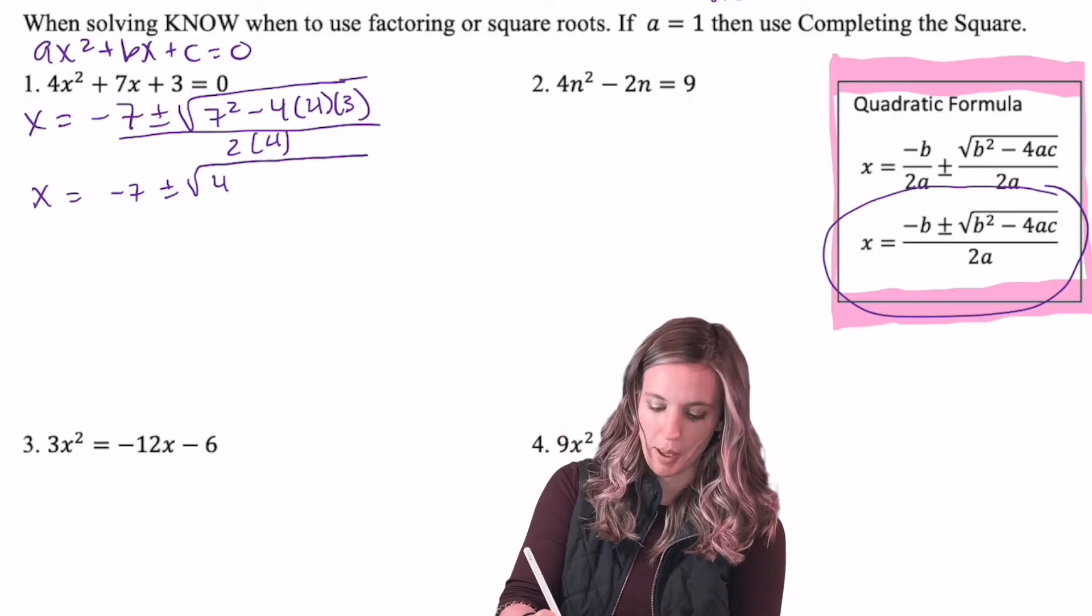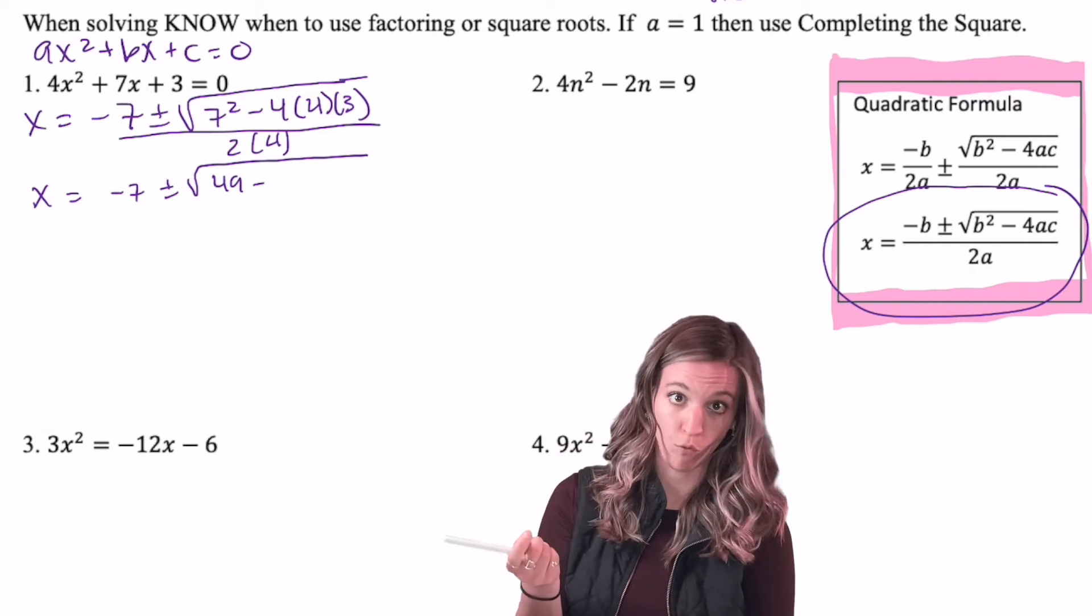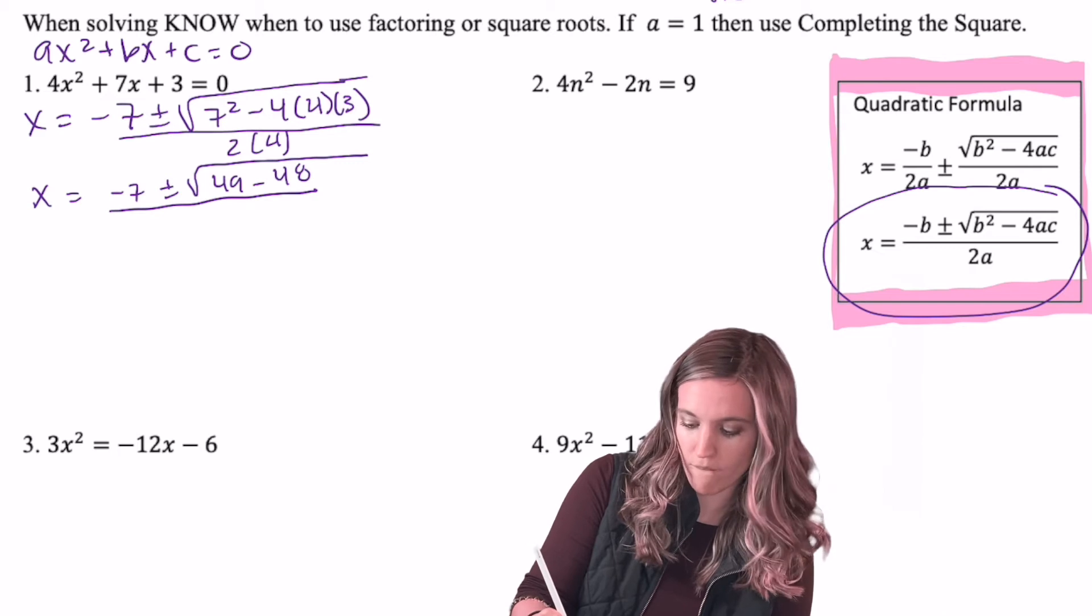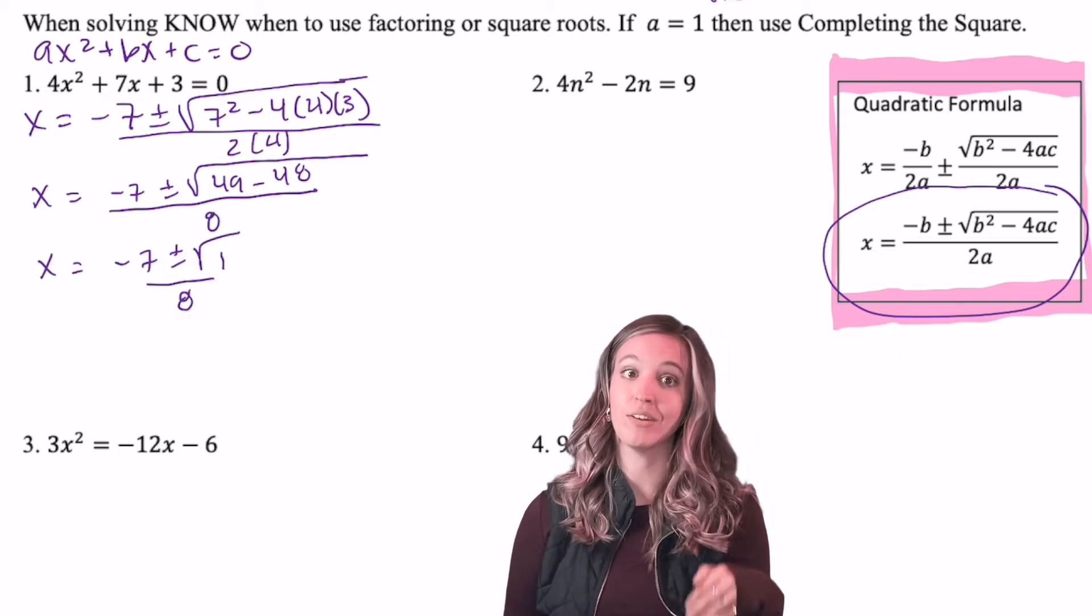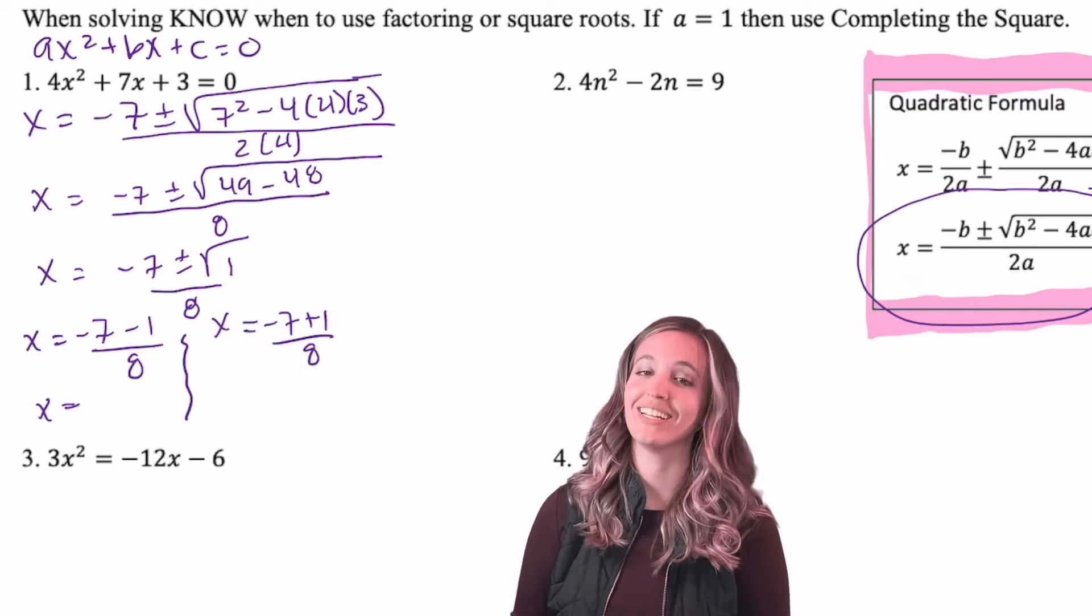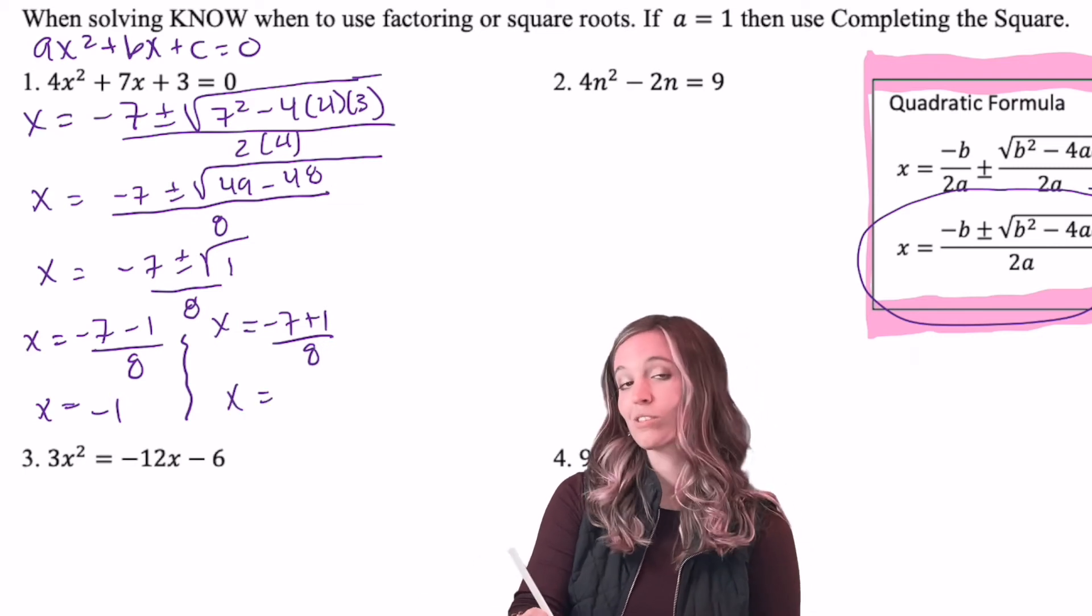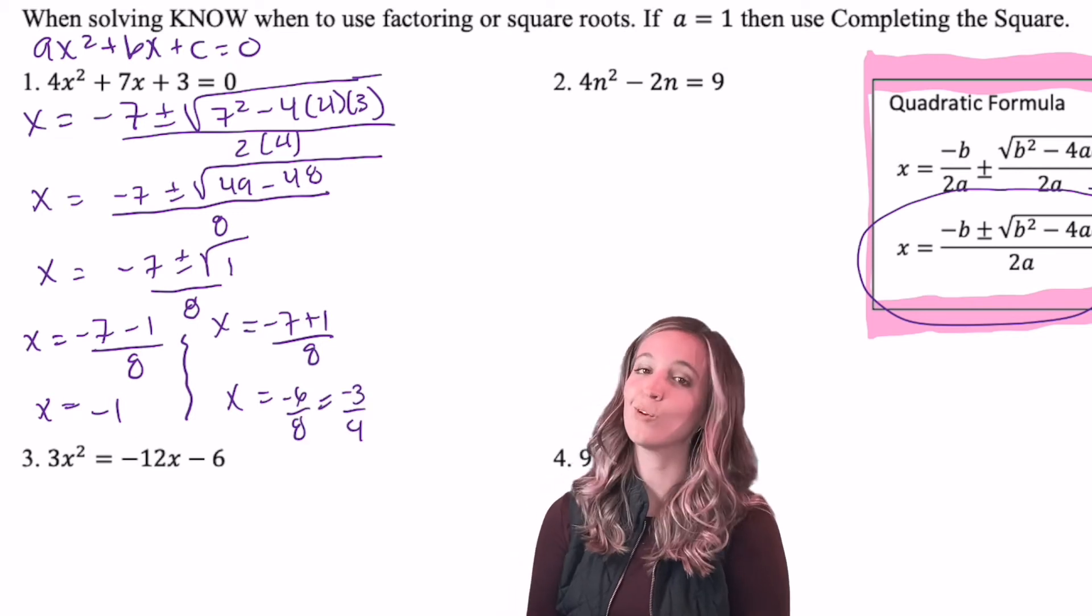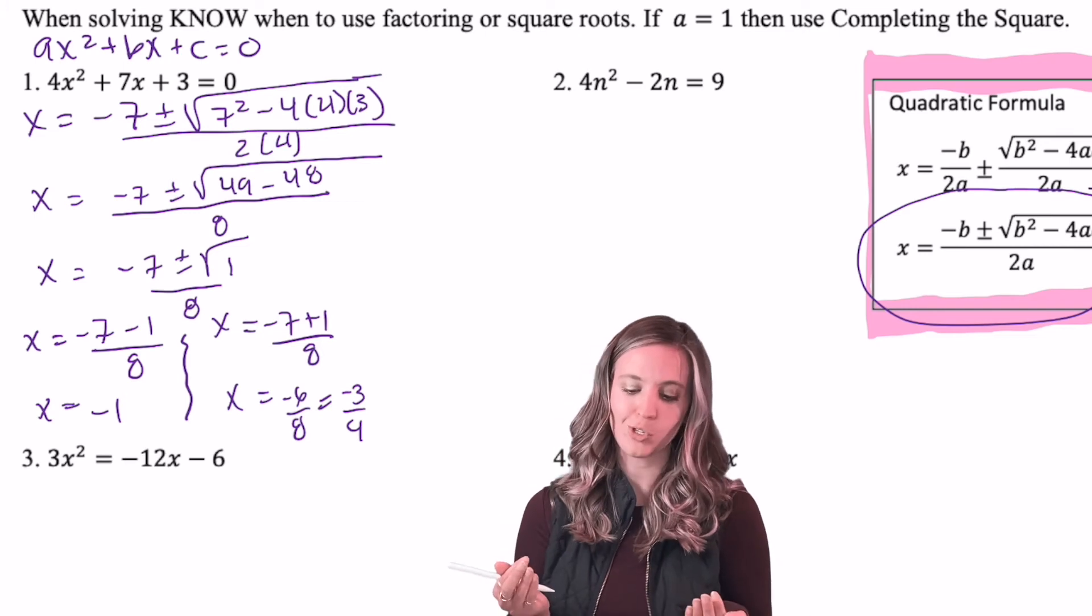7 squared is 49, minus 4 times 4 times 3. Well, 4 times 3 is 12, times 4 is 48. So minus 48. All over 2 times 4, which is 8. Square root of 1 is 1, so I'm going to have negative 7 plus or minus 1 divided by 8. So negative 7 minus 1 is negative 8, divided by 8 is negative 1. So there's one of my solutions. And then negative 7 plus 1 is negative 6 divided by 8. Ooh, I can simplify that. So divide the numerator and denominator by 2, and I can simplify it to negative 3 fourths. So there's my two solutions.